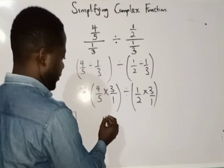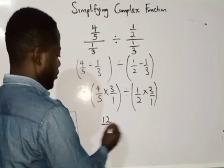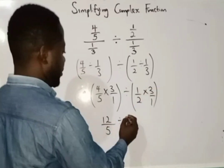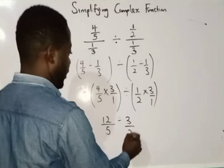So we have 12 over 5 divided by 1 times 3, which is 3 over 2.